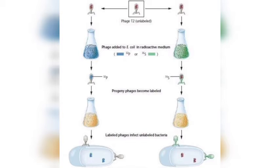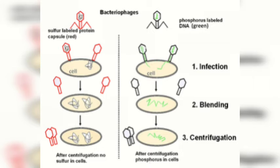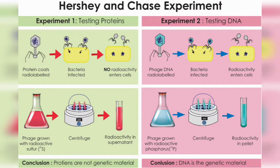The Hershey and Chase experiment depended on radioactive labeling of DNA and protein. DNA has phosphorus and protein has sulfur, but no protein contains phosphorus and no DNA contains sulfur. So they used P32 as a radio label for DNA, and S35 as a radio label for protein. This makes sense because DNA is rich in phosphorus and phage protein contains sulfur, but DNA does not.